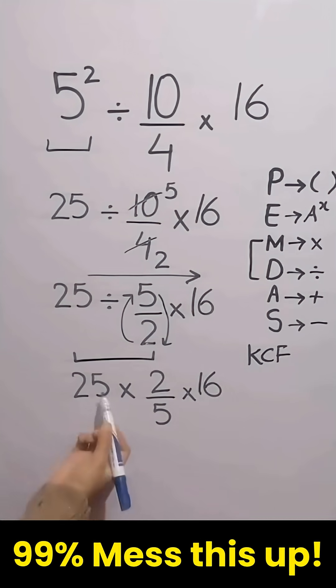Both cancel with 5 times table. So 5 times 2 equals 10, and 10 times 16 equals 160.